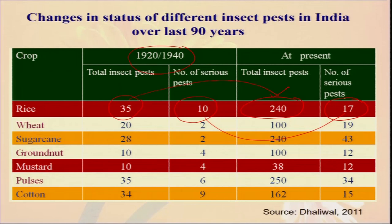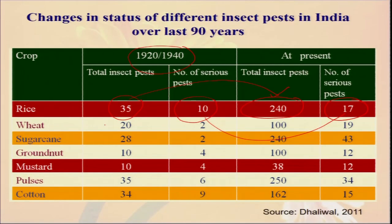Over the years, with commercial agriculture and due to temperature change, climate change, and other effects, the number of insects attacking a particular crop has increased. Previously it was very less, but now it is more. And this is not only for rice — it is for all crops: wheat, sugarcane, groundnut, mustard, and cotton.